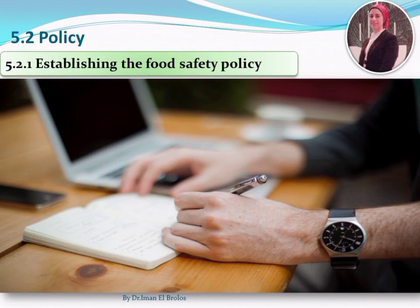Section 5.2.1 covers establishing the food safety policy. Directions for establishment of food safety policies remain the same as the past version. The food safety policy involves the direction and intentions of the top management.